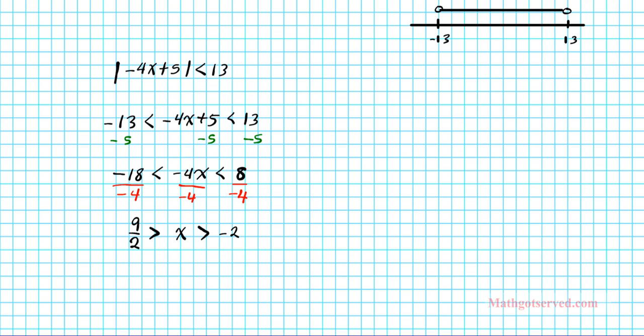So if we reorder it, we can write this as negative 2 is less than x, and x is less than 9 over 2, in decimal form 4.5. So there goes your answer to problem 32.